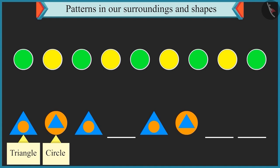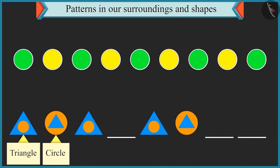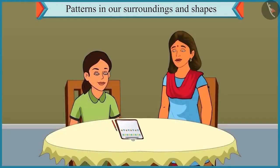Now tell me, which shapes would come at the empty places? A small triangle inside a circle would come here in the empty place. Well done. Now try building this pattern. A shape with a small circle inside a triangle would come next. What will come after that? A shape with a small triangle inside a circle would follow. Absolutely right. Well done.